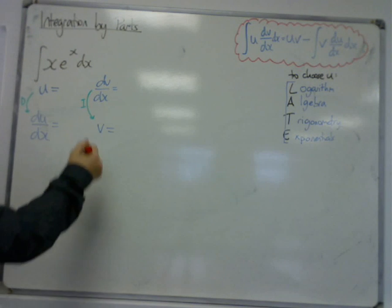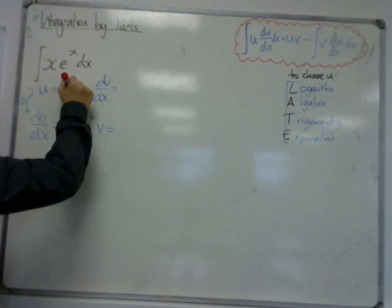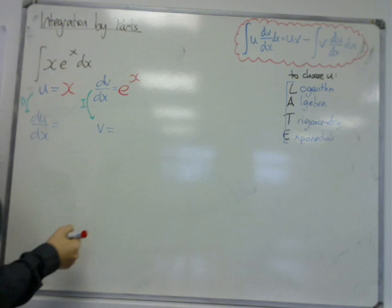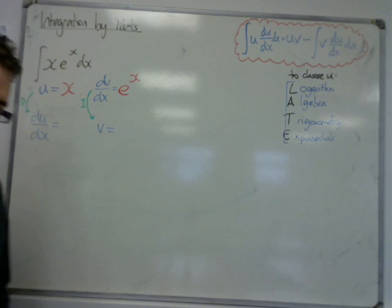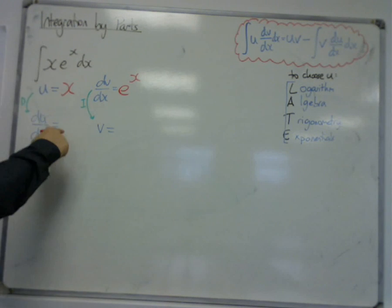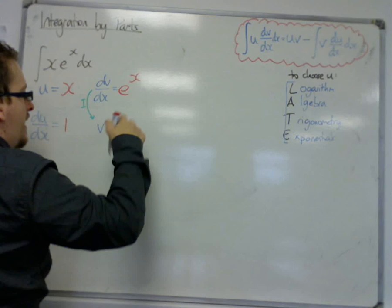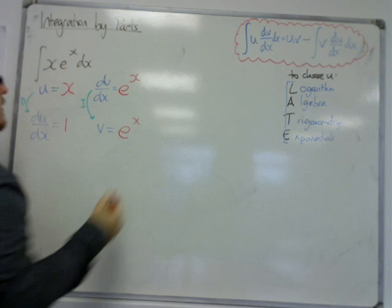So we need these four bits of information. The u, we've decided, is going to be the x. The dv/dx is going to be the e^x. So that's made that choice for us. Differentiating x, we get 1, and integrating e^x, we get just e^x.